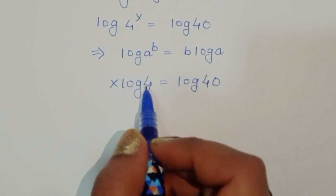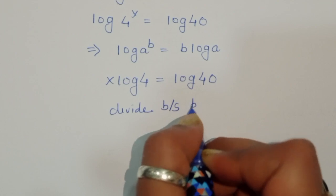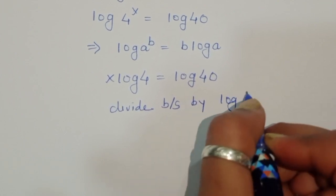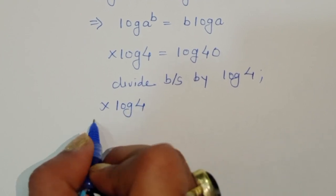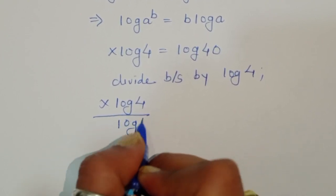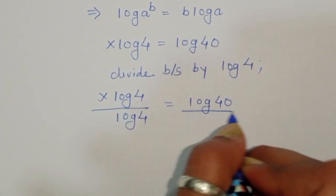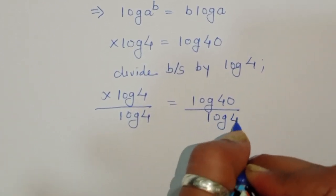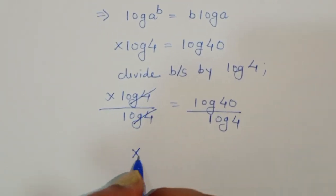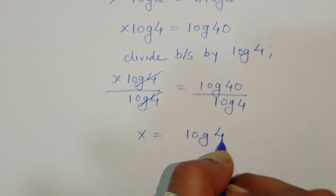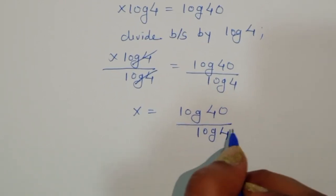Now we have to cancel log of 4, so we divide both sides by log of 4. Then x times log of 4 divided by log of 4 equals log of 40 divided by log of 4. The log of 4 cancels, so x is equal to log of 40 divided by log of 4.